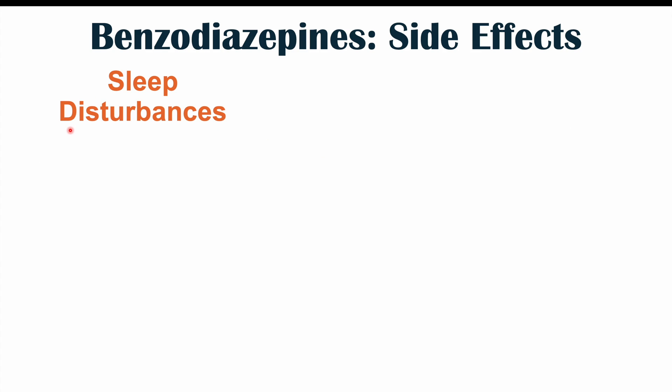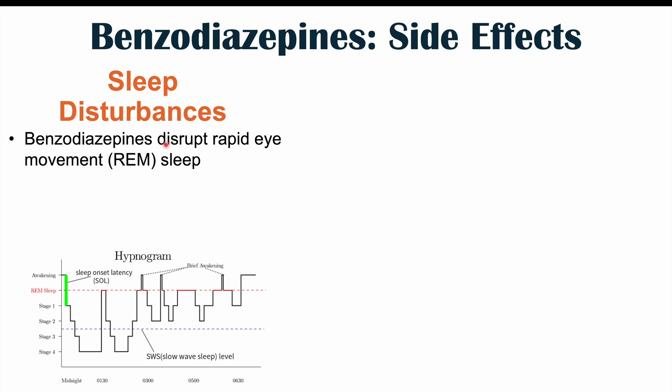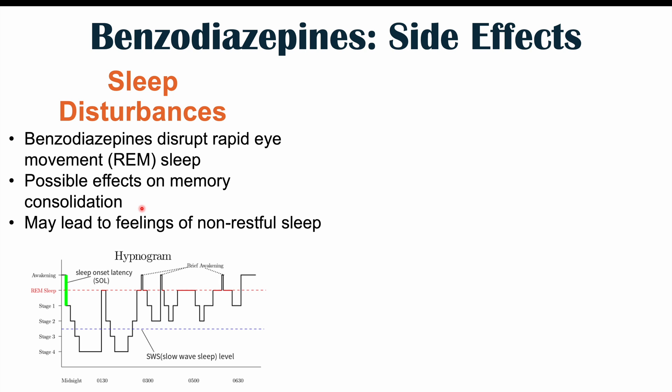Benzodiazepines also cause sleep disturbances by disrupting REM sleep, which may lead to possible issues with memory consolidation. REM sleep is the stage where patients are dreaming, their eyes move rapidly, and this stage is important for memory consolidation. Disrupting it can lead to feelings of non-restful sleep and tiredness the following day.